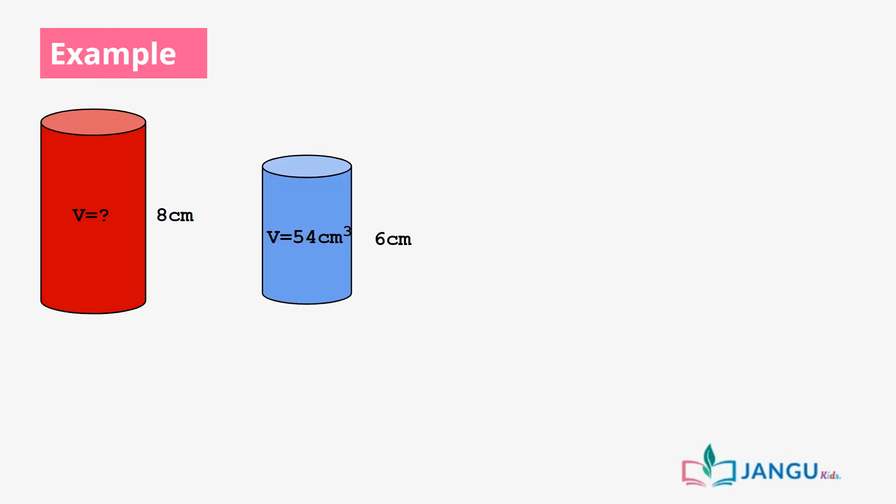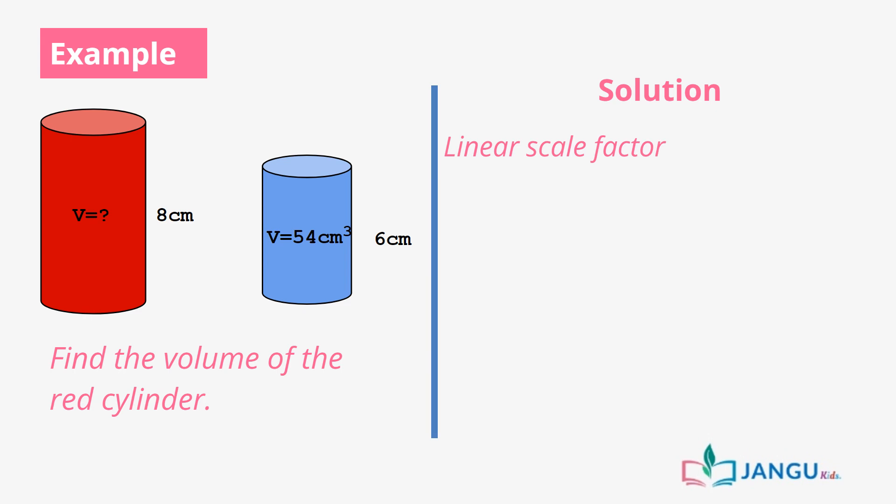Let's see what this means with this example. Find the volume of the red cylinder. First, we find the linear scale factor by dividing the length, which is 6cm and 8cm, and this gives us 3 over 4.